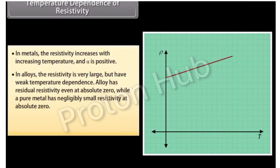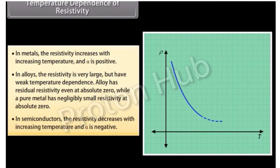In alloys, the resistivity is very large but has weak temperature dependence. An alloy has residual resistivity even at absolute zero while a pure metal has negligibly small resistivity at absolute zero. In semiconductors, the resistivity decreases with increasing temperature and α is negative.